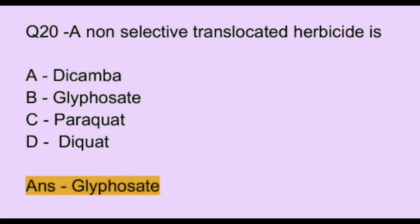Question number 20. A non-selective translocated herbicide is: Option A: dicamba. Option B: glyphosate. Option C: paraquat. Option D: diquat. The correct answer is option B, which is glyphosate.